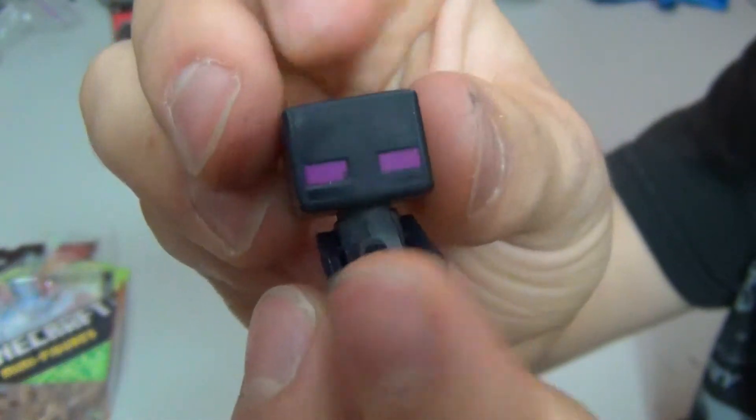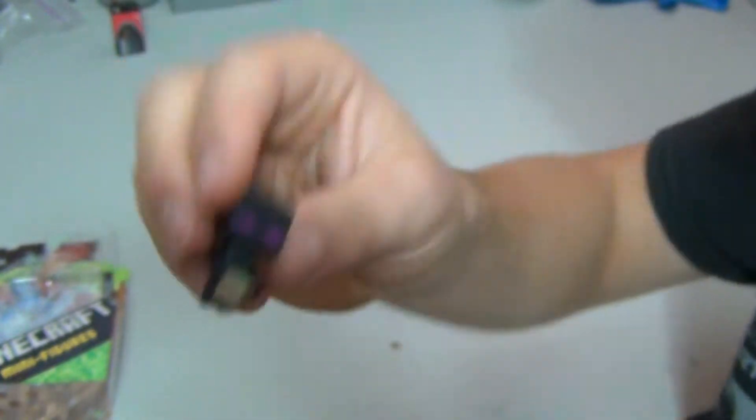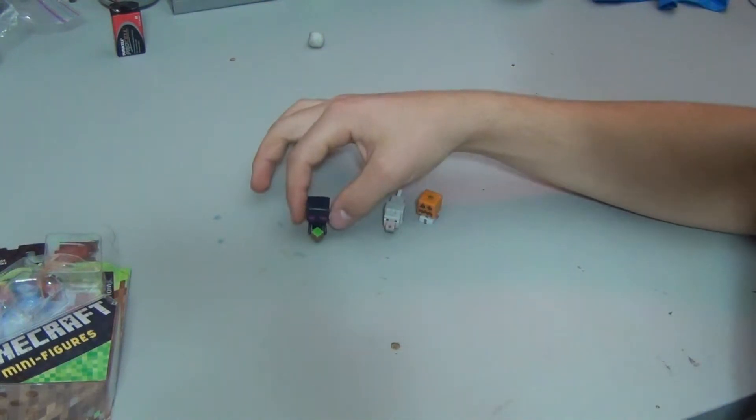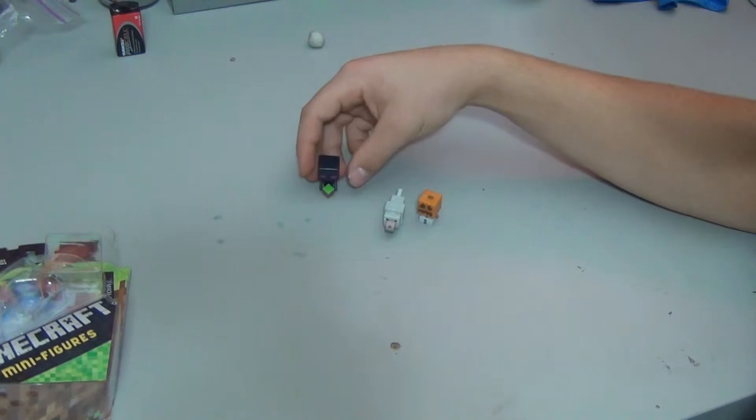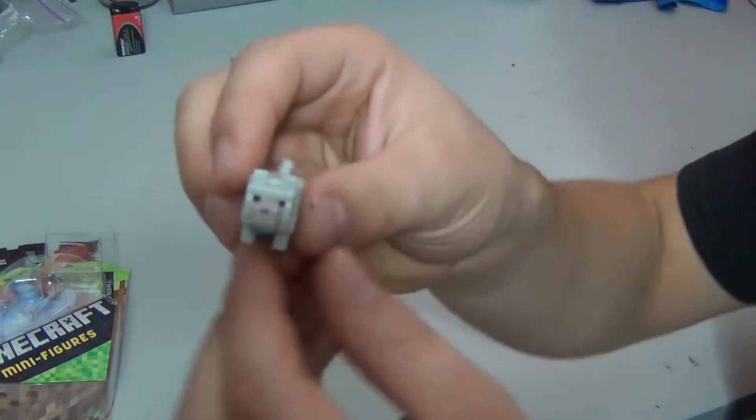I'm just going to give you a 360 of this guy. He actually stands up very well. If you set him on the table, he will stand up very easily. The aid of his little dirt block there is helping him stand up, but I'm very impressed. They really did think out the stability issue with the Enderman, and this is a very good solution because it looks very fine.